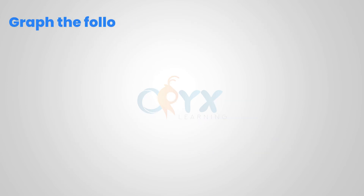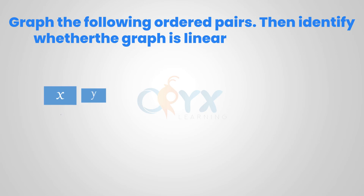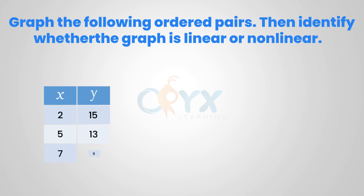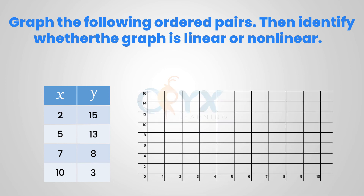Graph the following ordered pairs, then identify whether the graph is linear or non-linear. Plotting each point: (2, 15), (5, 13), (7, 8), and (10, 3). We can see that a straight line would not hit all of the points. Therefore, it is a non-linear function.